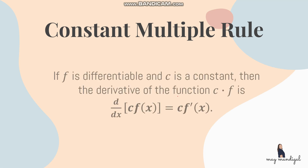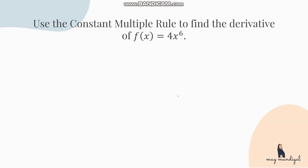Next is the constant multiple rule: if f is differentiable and c is a constant, then the derivative of c times f is c times f prime of x. If you have a constant that you can factor out of the function and the remaining function is still differentiable, you can write them separately, solve the derivative of the function, and then multiply by the constant.